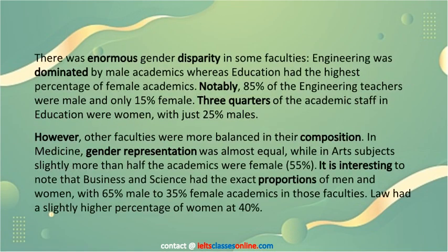Here is the body. We will write the main points here, in two paragraphs. There was enormous gender disparity in some faculties. Engineering was dominated by male academics whereas education had the highest percentage of female academics. Notably, 85% of the engineering teachers were male and only 15% female. Three quarters of the academic staff in education were women, with just 25% males.